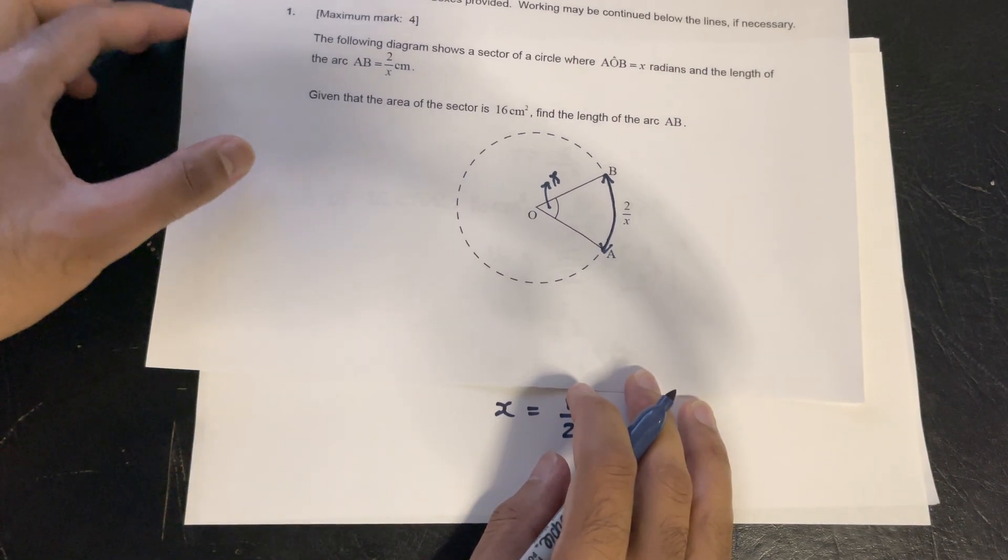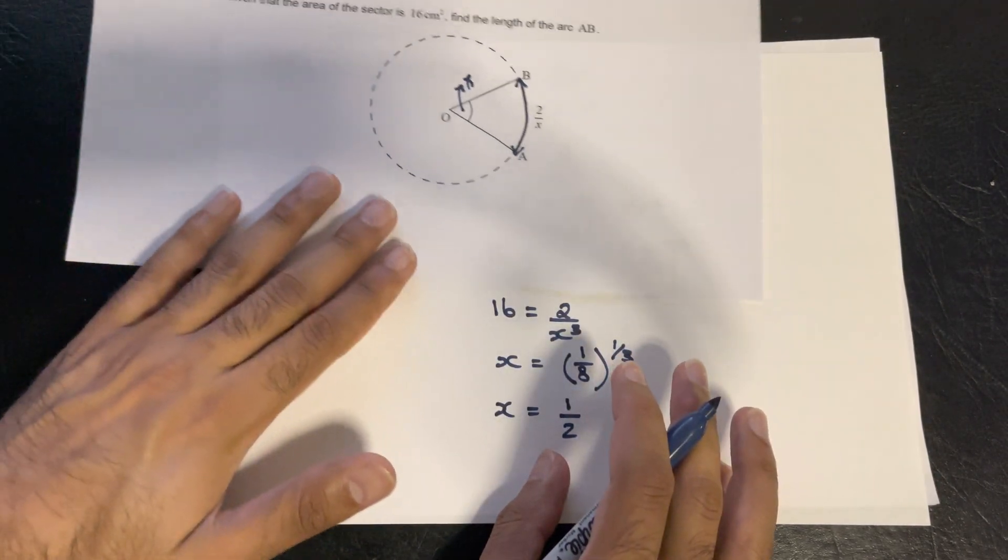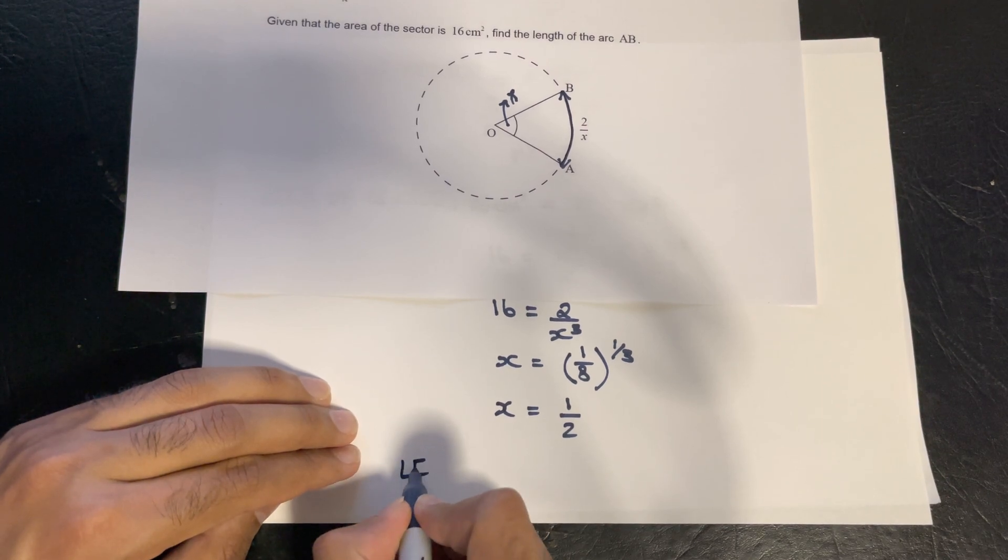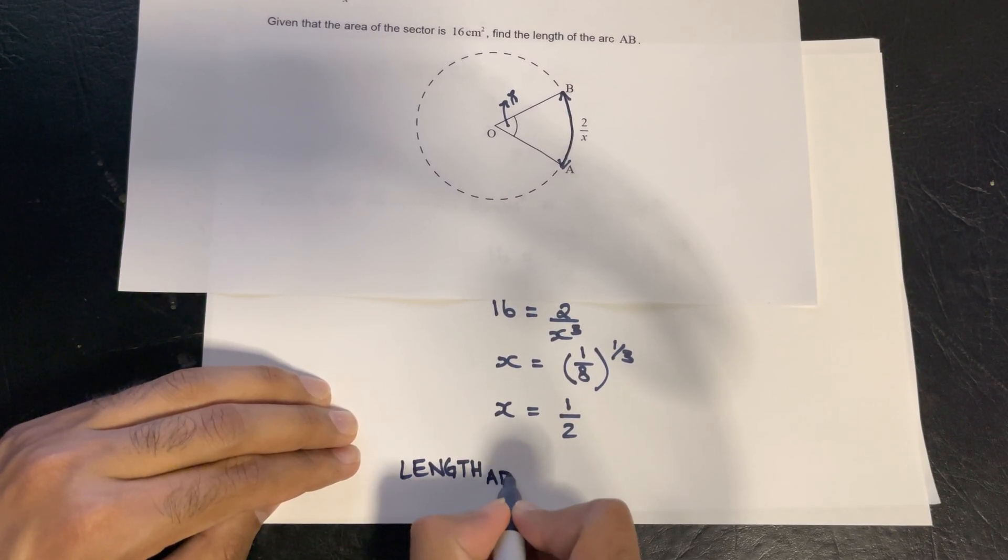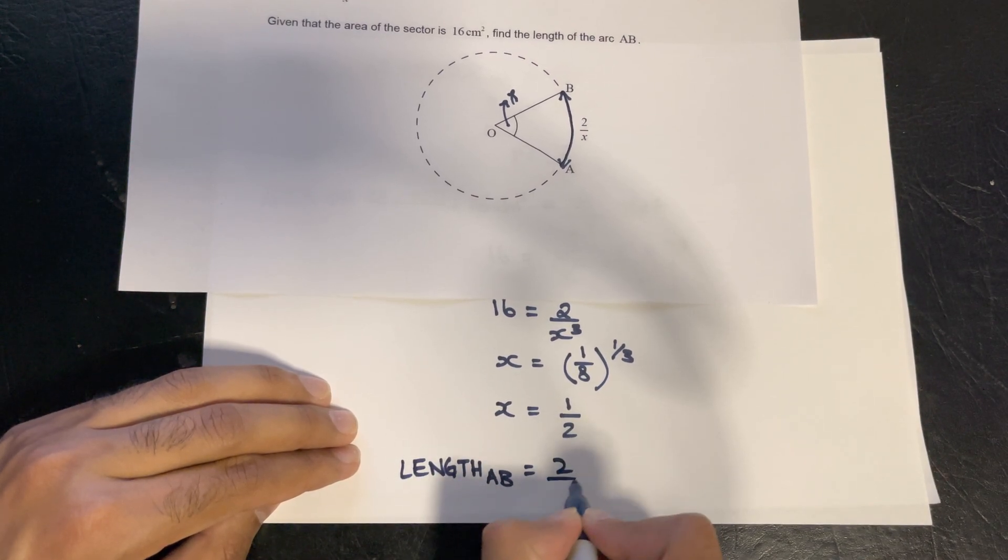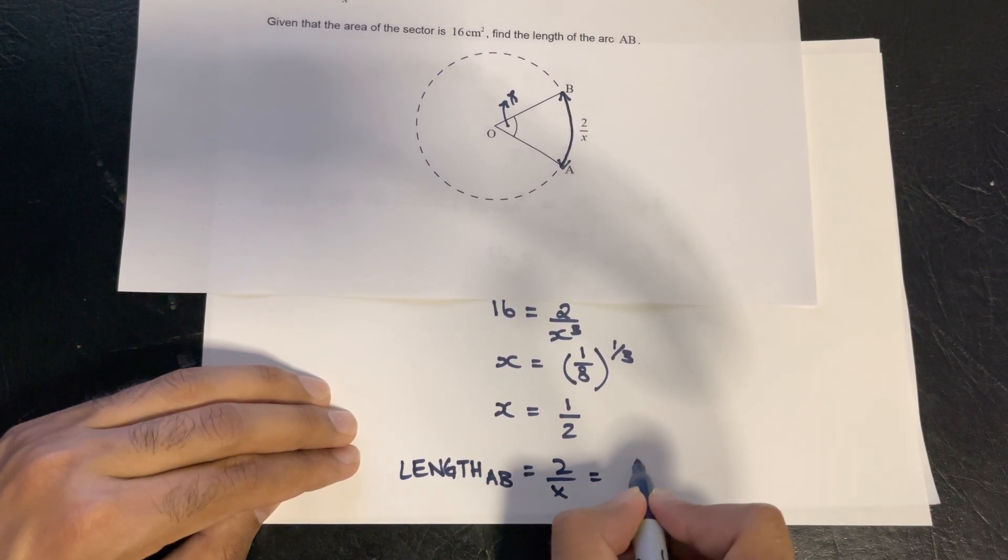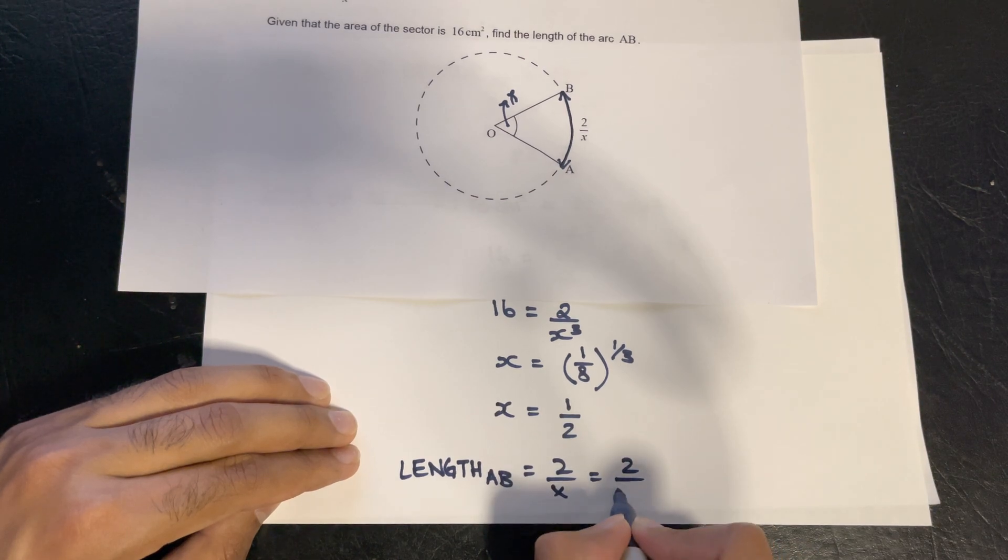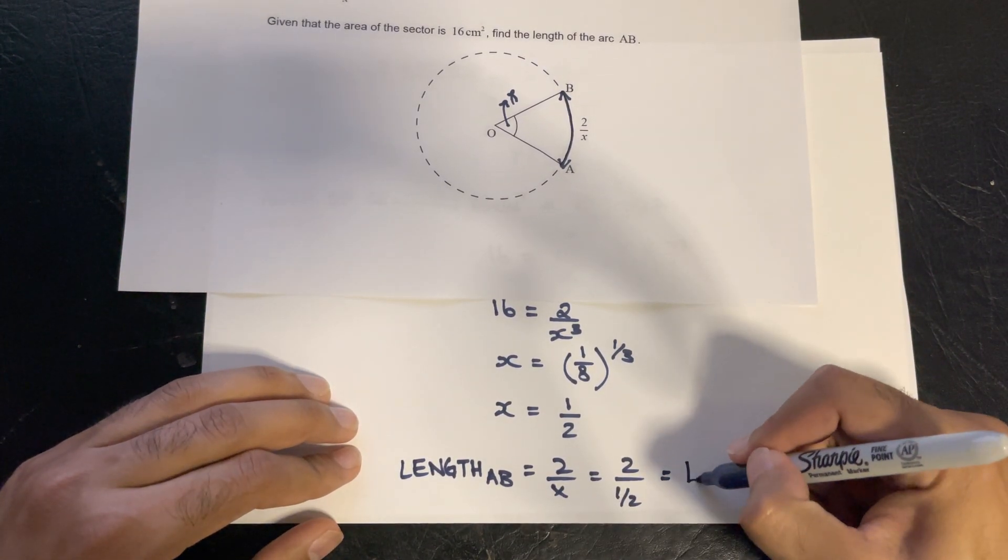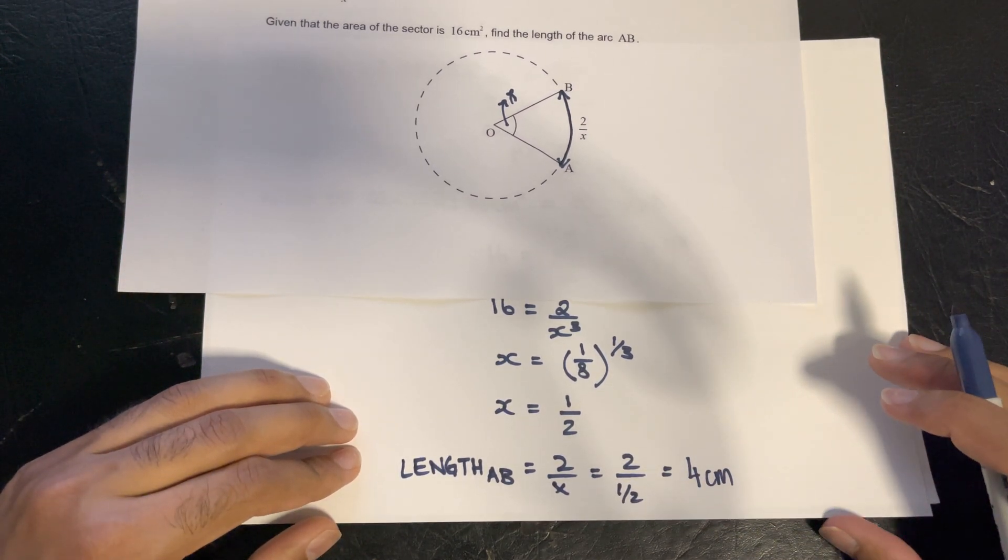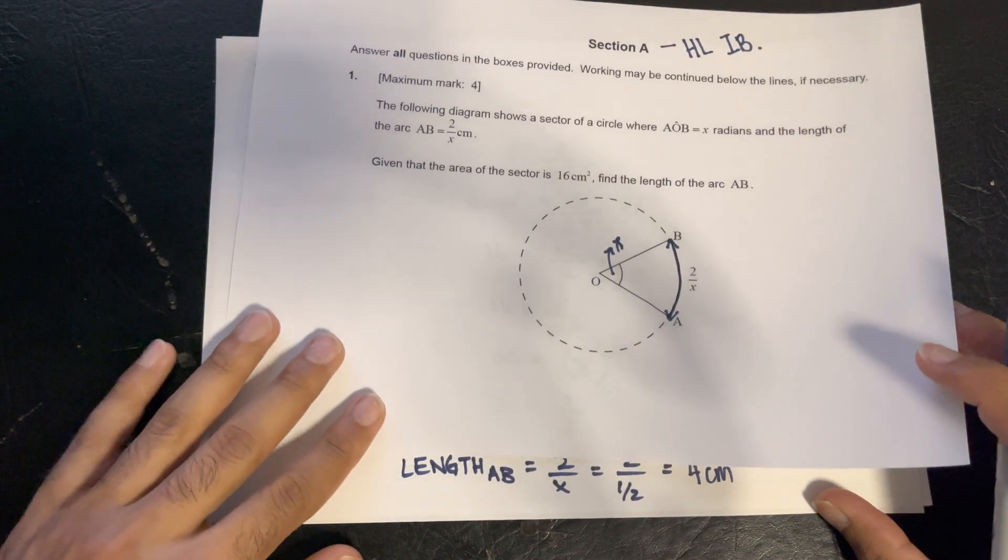We can just make that simple substitution. So the length AB equals 2 over x, which equals 2 over half, and we know that as 4 centimeters. And that's how you would solve this question.